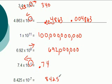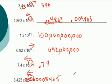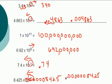8.425 times 10 to the negative 7 means we're going to be moving 7 spaces to the left. That gives us 0.0000008425.